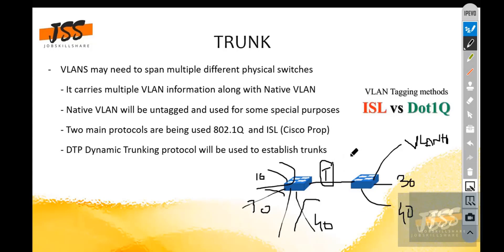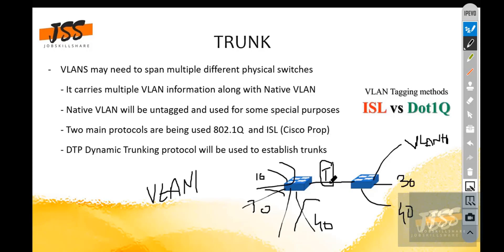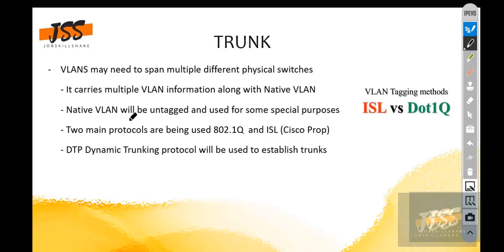VLANs may need to span multiple different physical switches. A trunk carries multiple VLAN information along with a native VLAN. This means it will also send information about VLAN 1 — VLAN 1 information can also be sent through this link, along with the native VLAN.